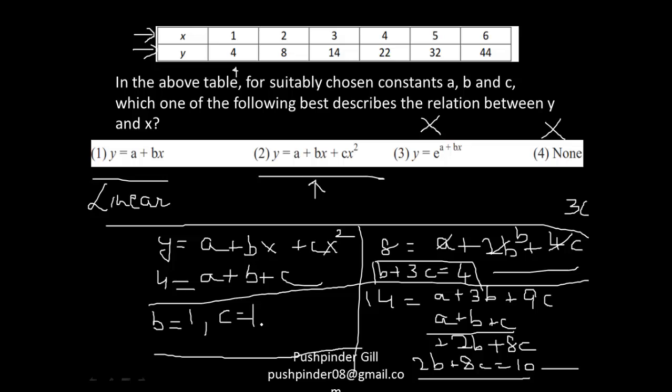If we simultaneously solve this equation and this equation. Now if b is 1, c is 1, a is equal to 2, right? So if b is 1, c is 1, a is equal to 2, so if you've got the values of constants, now it's time to check whether it holds true or not.